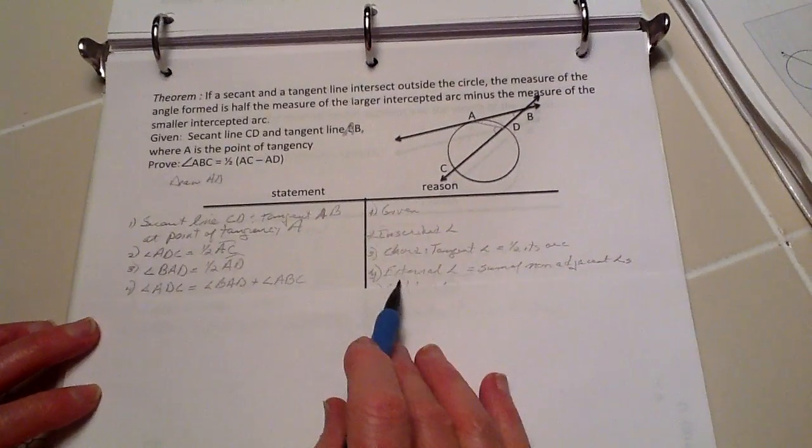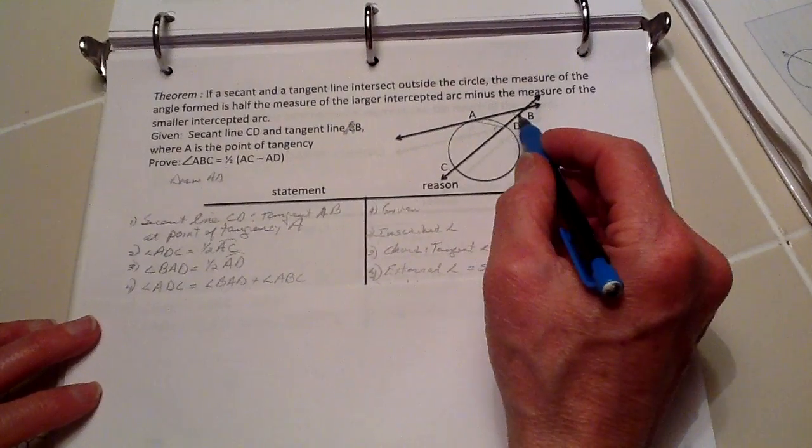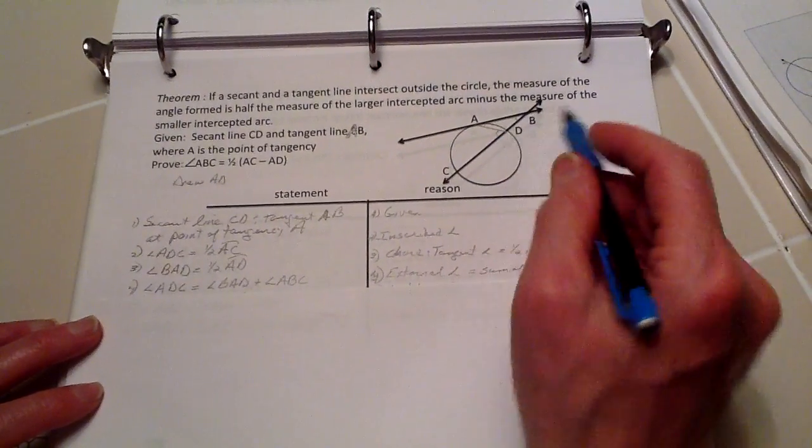How do we know that? Because the external angle is equal to the sum of the non-adjacent angles, and these are the non-adjacent angles of this triangle.